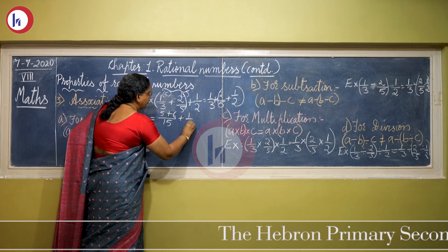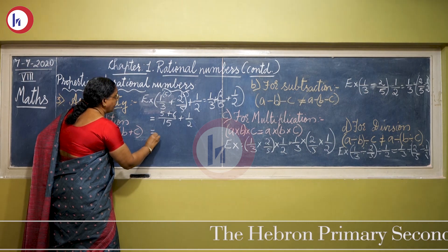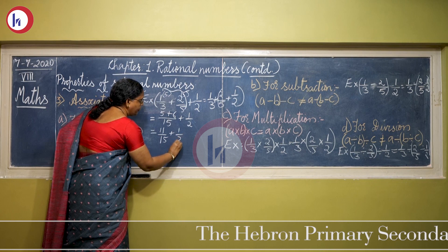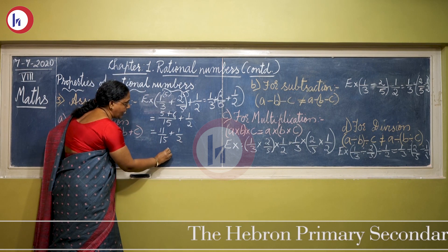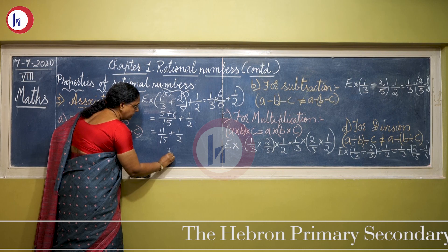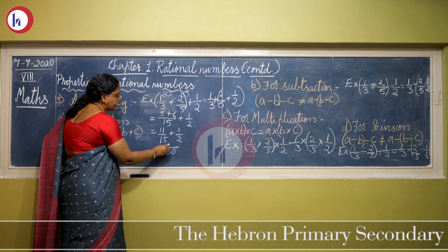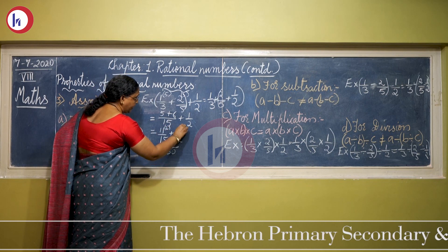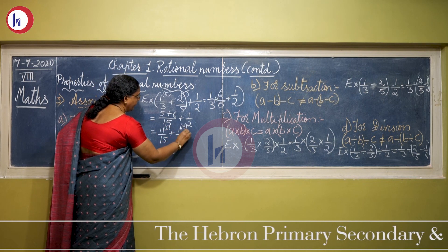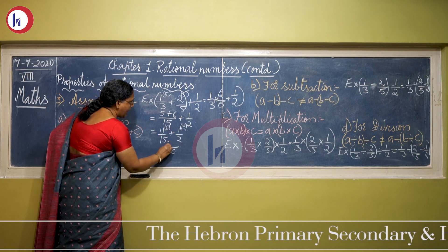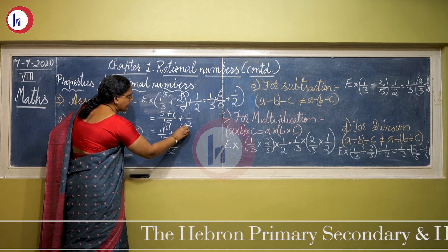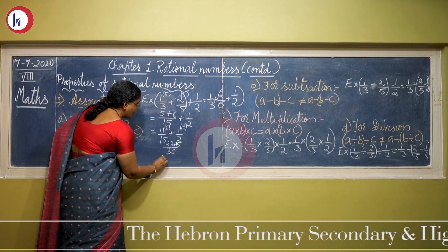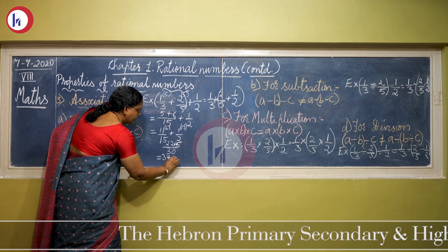Then 11/15 + 1/2. Again find the LCM of 15 and 2, which is 30. 30 divided by 15 is 2, multiply; 30 divided by 2 is 15, multiply. So we get 11×2 = 22 plus 1×15 = 15, giving us 37/30.